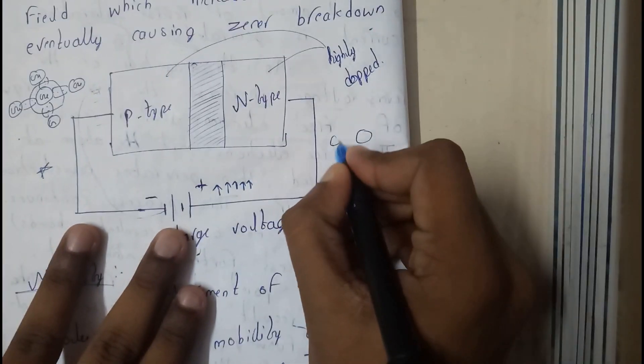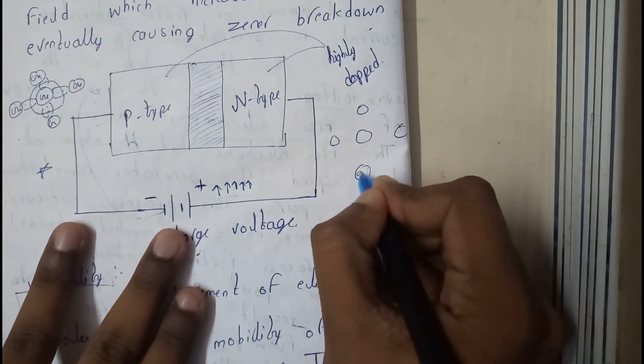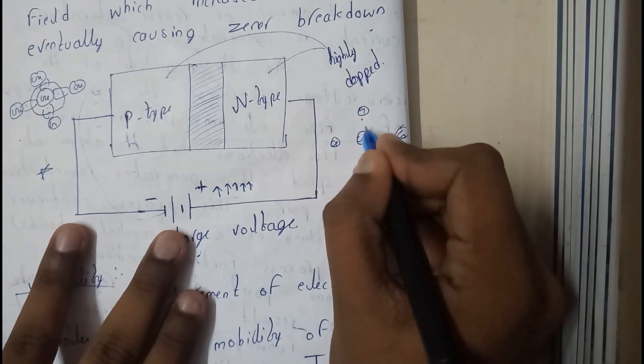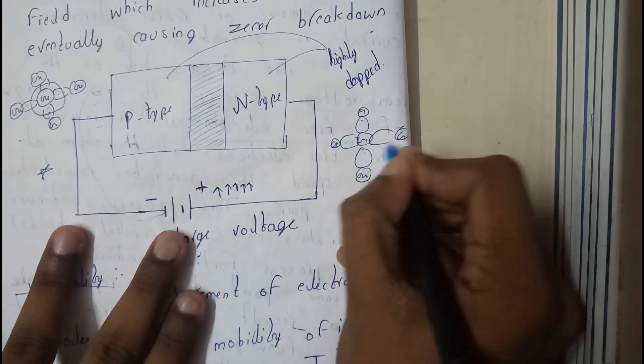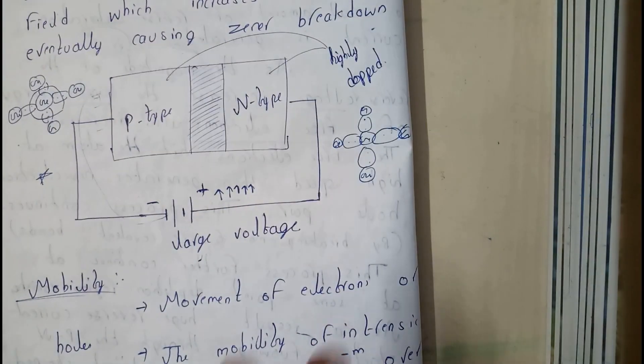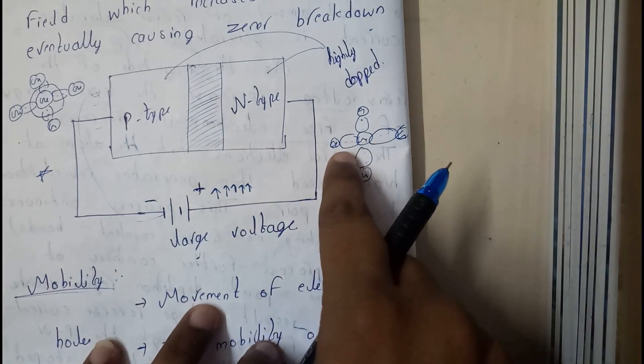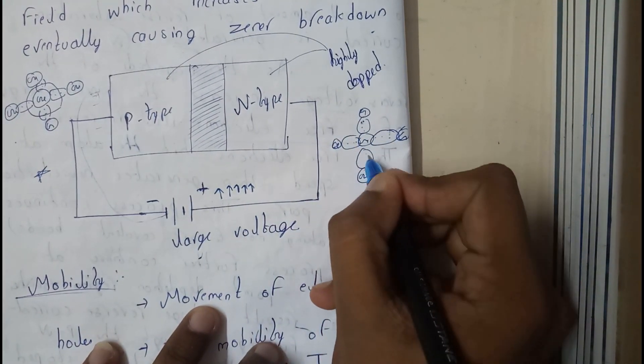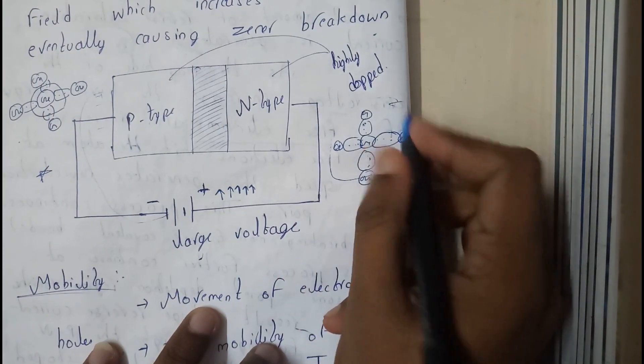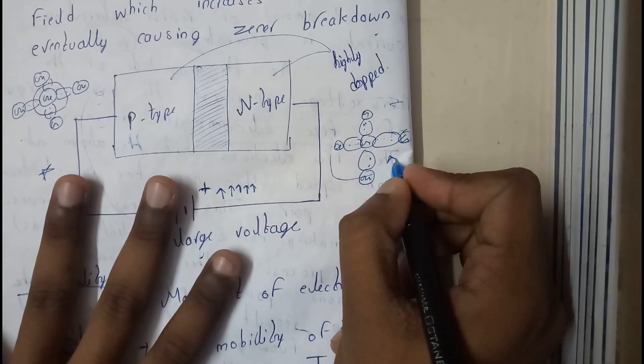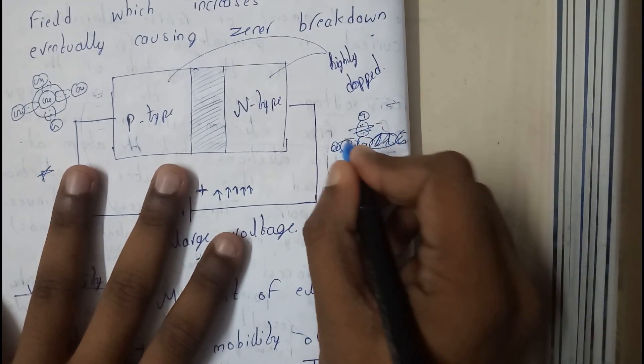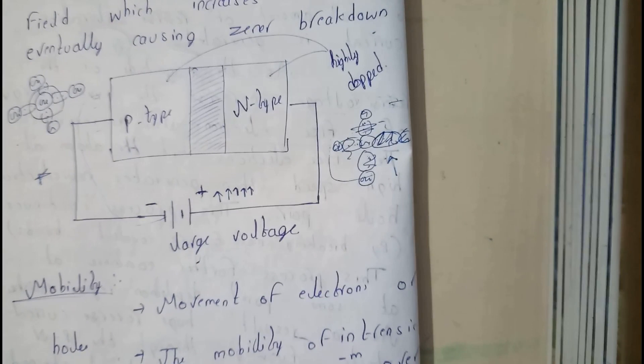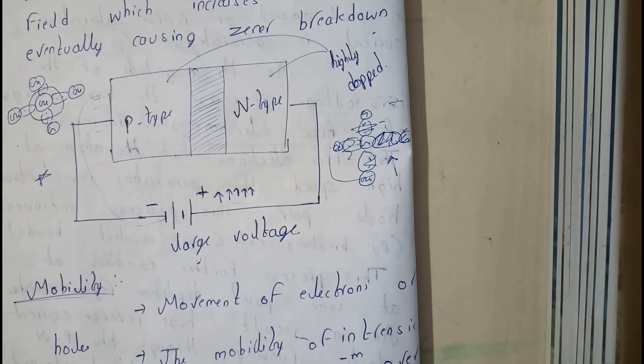As we all know, let us assume this as our germanium atom. In one of my tutorials I've drawn the P type and N type, and discussed this. Basically, here there will be electrons. This is the complete germanium. If we give a large amount of reverse bias, all these bonds are going to break and all the electrons will be outside.